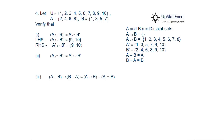The second identity: A intersection B complement. Since A and B are disjoint, their intersection is the null set, and its complement is U. Similarly, A complement union B complement includes all elements, giving U. So A complement union B complement equals U, and the identity is verified.